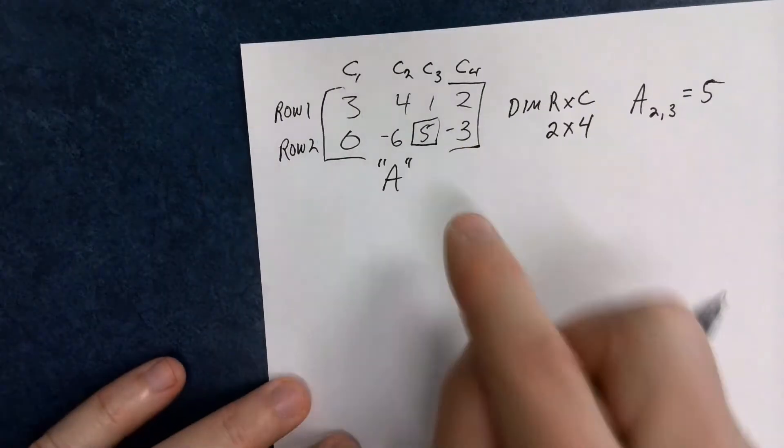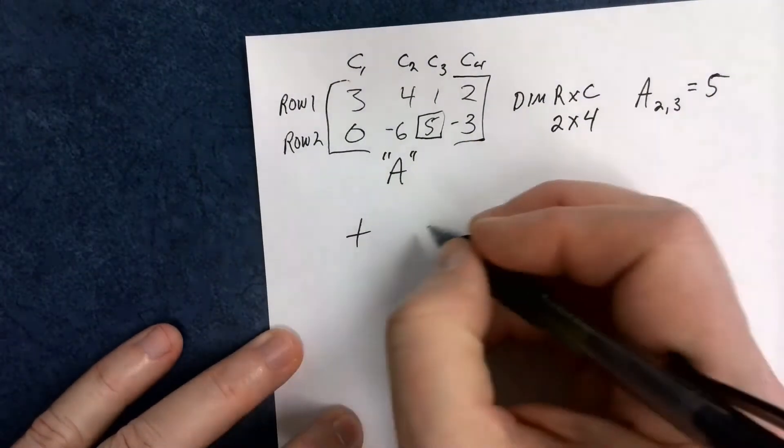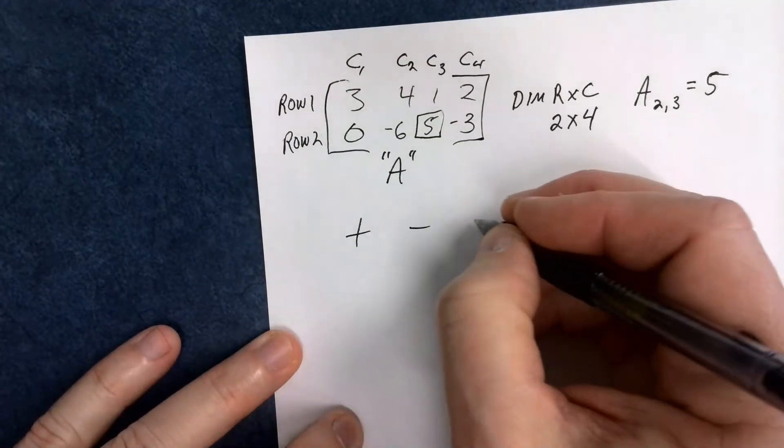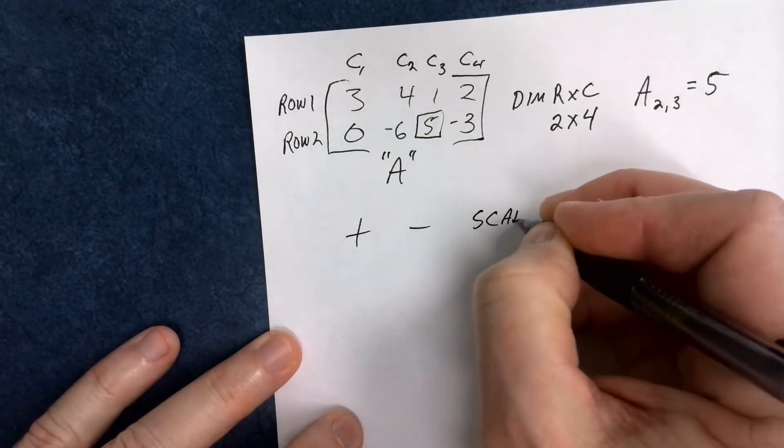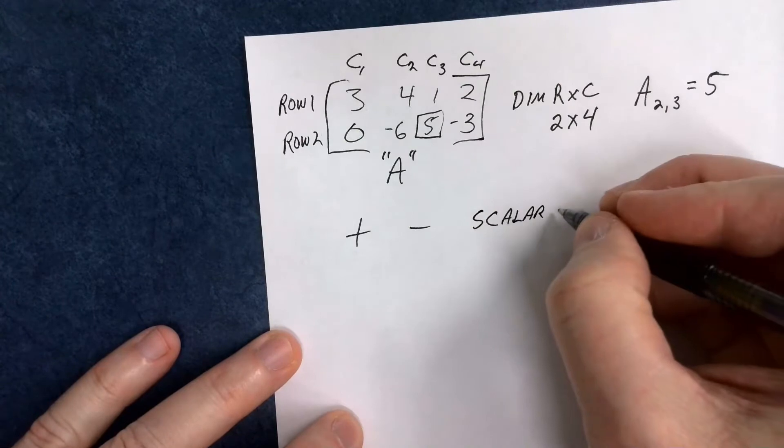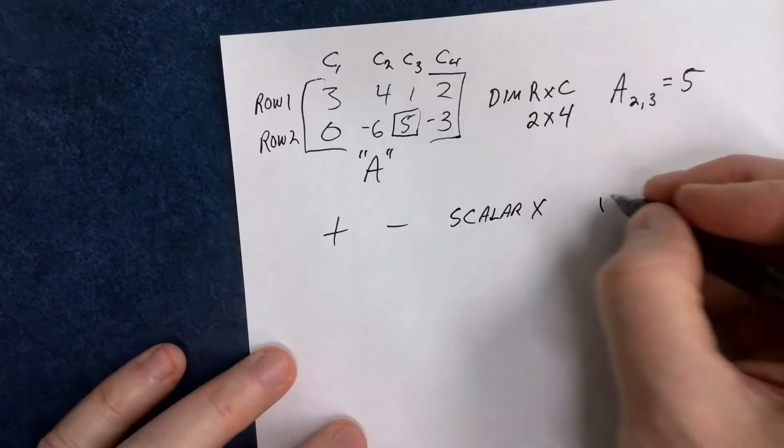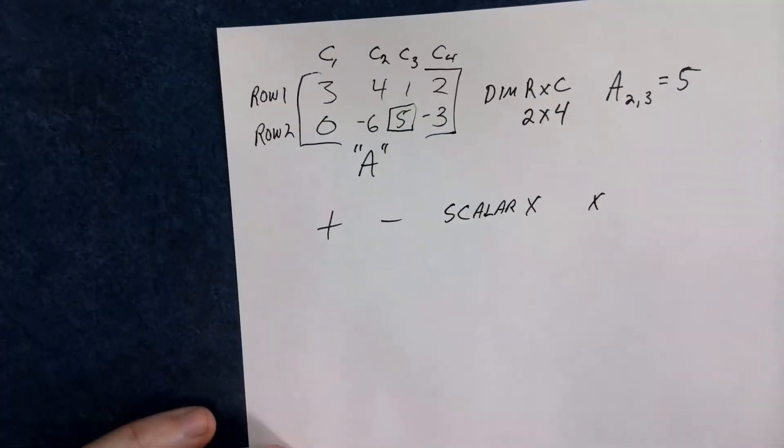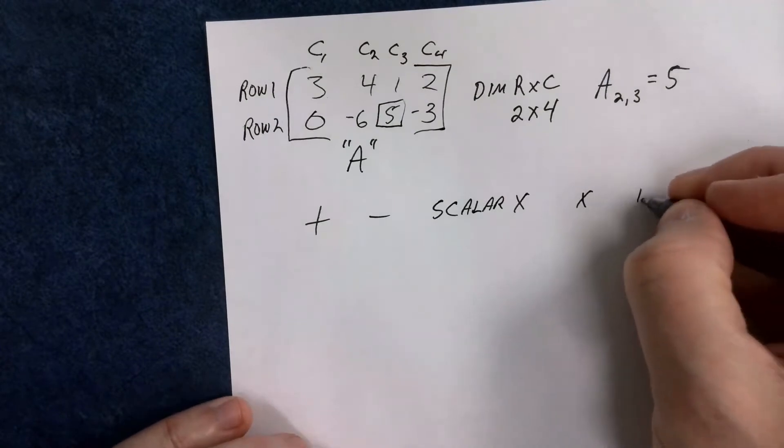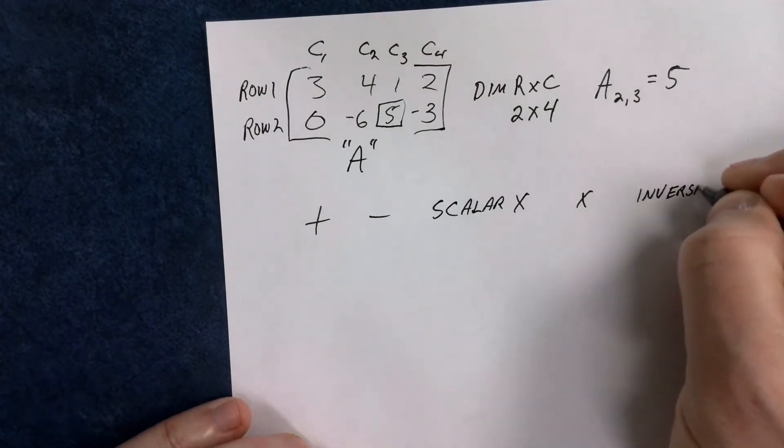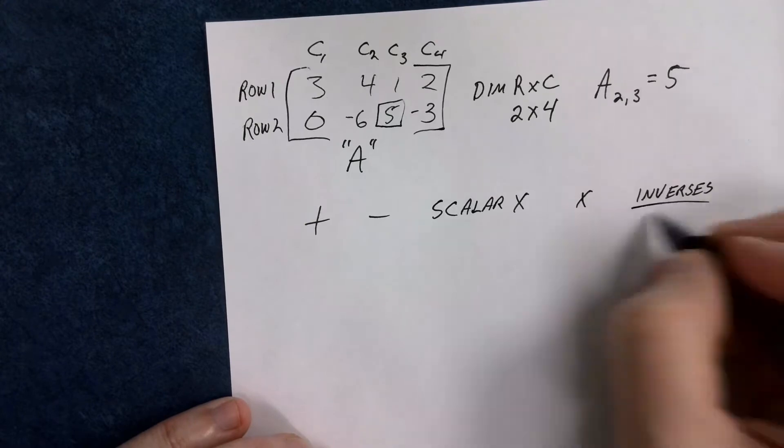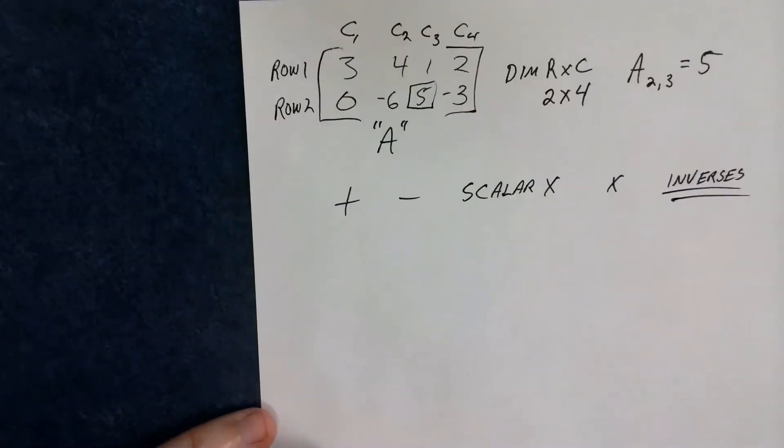So, what are some of the things that we can do with these things? We can add matrices, subtract matrices, do something called scalar multiplication, and something called regular multiplication. There also will be some things called inverses, and it's kind of like a division thing, but it's kind of special cases. So here we go.